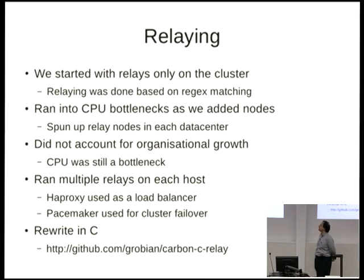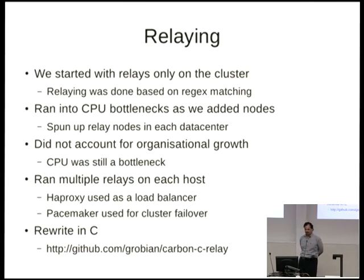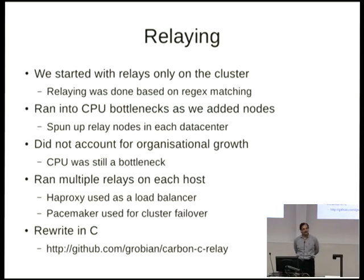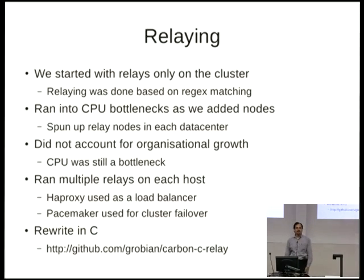We started with relays based on the cluster — two data centers, one cluster each for storage. We ran into CPU bottlenecks, so we spun up more relay nodes. We didn't account for organizational growth — this quarter we're adding as many hosts as we had when I joined, and the growth rate is expected to increase. We ended up putting multiple relay instances on each host with HAProxy doing TCP load balancing between them, plus Pacemaker for failover. Finally, last month we rewrote the relays in C for raw performance. Python's regular expression matching and hashing functions are fairly bad — we saw CPU usage drop from 90% to about 10%.